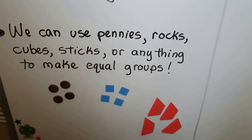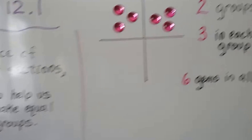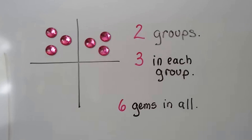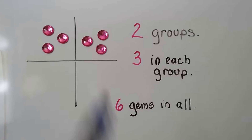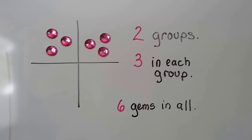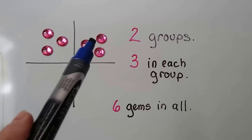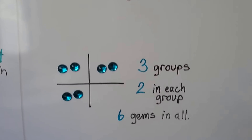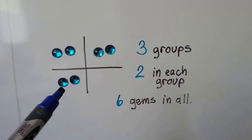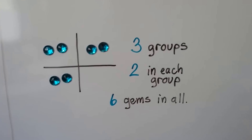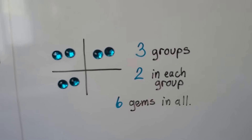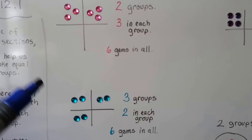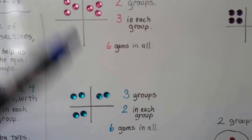There are eight gems in all across those four groups. We can use pennies, rocks, cubes, sticks, or anything to make equal groups. Here we have two groups with three gems in each group, giving us six gems in all — sort of like three plus three. Now with three groups of two gems each, we still have six gems in all.